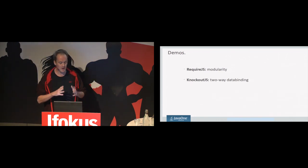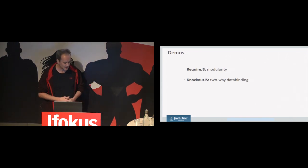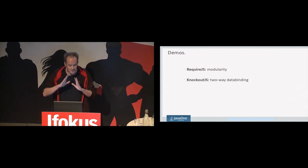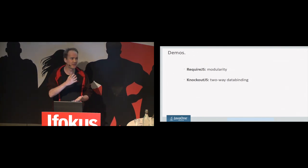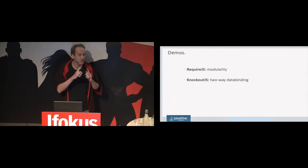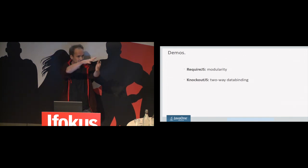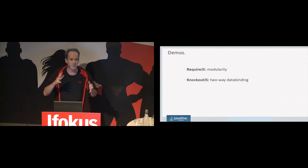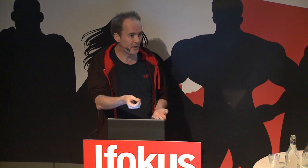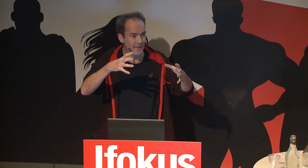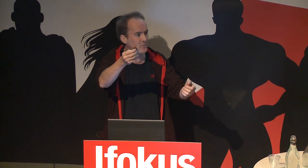The building blocks of the solution are Require and Knockout. When you get to the demo, there's nothing new here — you don't need to learn anything new, it's based on existing open source libraries. It's not a library itself, it's not Jet.js, it's not a framework that gives you everything. It gives you a modular system based on Require for modularity and Knockout for two-way data binding. If you are familiar with Knockout and Require and imagine them combined in one application, you have pretty much the entire idea of what Jet is about.